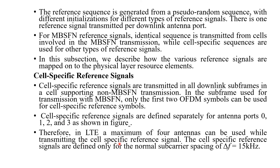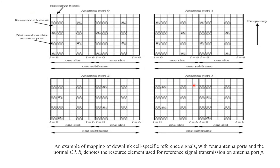This diagram gives an example of mapping the downlink cell-specific reference signal with four antenna ports — port 0, port 1, port 2, and port 3 — with normal CP. R_p denotes the resource elements used for reference signal transmission on antenna port p. Wherever R0 appears, those resource elements are used for the reference signal on port 0; R1 for port 1; R2 for port 2; R3 for port 3.